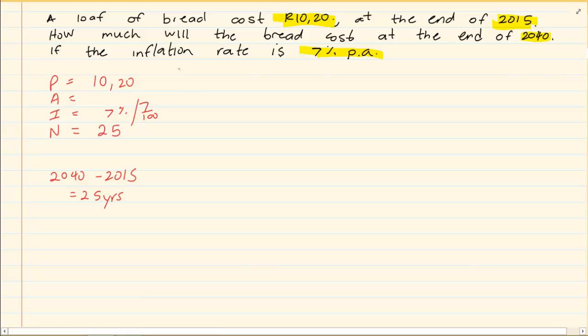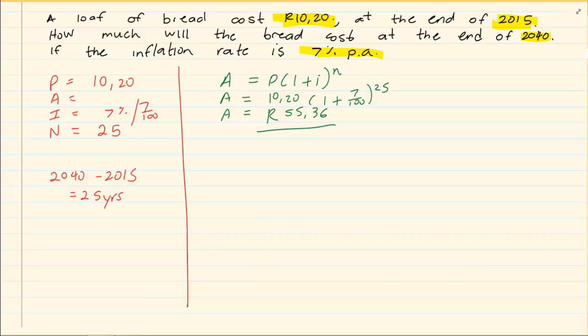Once we got our P, A, I, N written down and we filled in the information we need to go to the correct formula. We know it is compound interest because it is inflation. Then you simply press it into your calculator and you will have the cost of the bread in 25 years will be 55 Rand and 36 cents. Now let's change the question slightly.